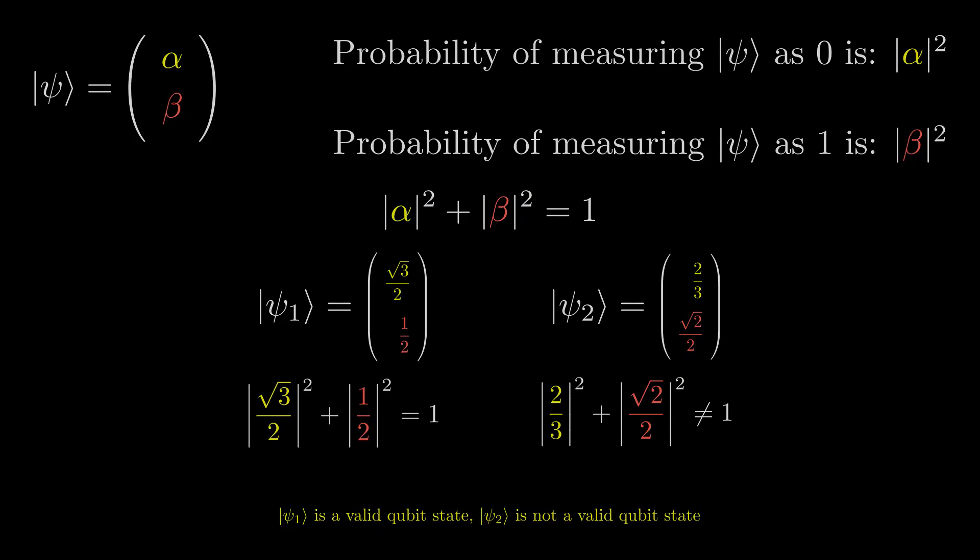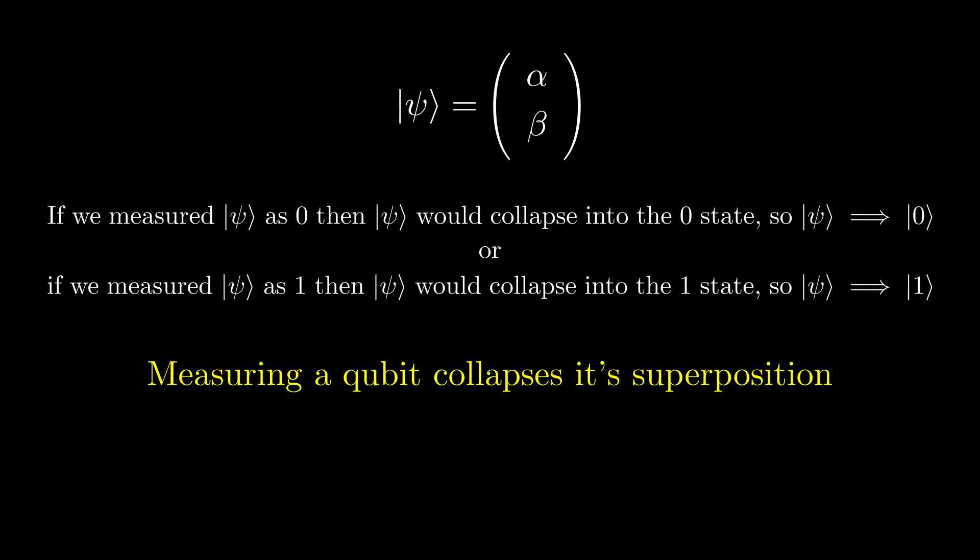When we do measure a qubit that is in superposition, it collapses into the measured state. So if we measure this state to be zero, it collapses into the zero state, so every measurement after will be zero. This is because of the laws of quantum mechanics. When we measure something, it permanently changes the state of the system to that measurement.